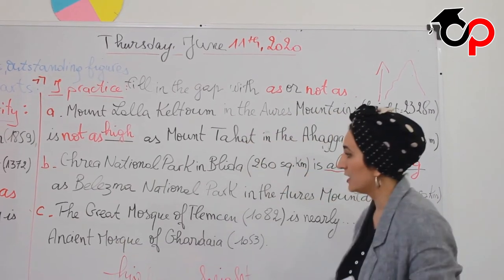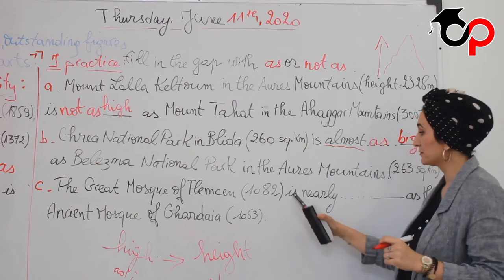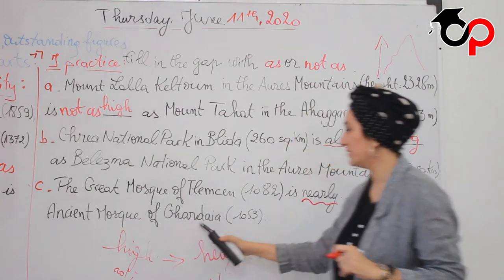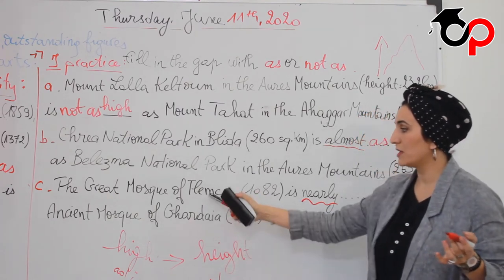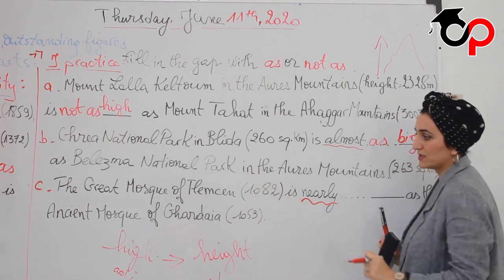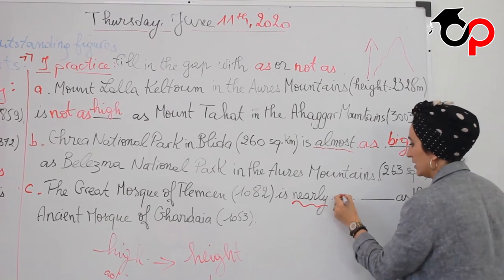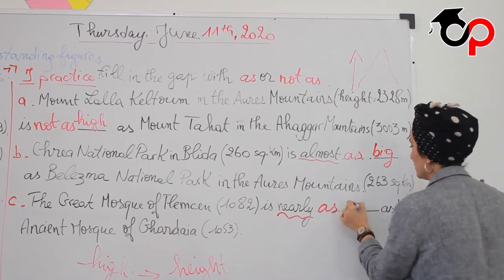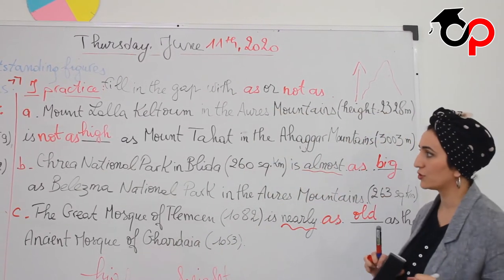The last example of Task 1: The Great Mosque of Tlemcen, which was built in 1082, is very ancient — it is nearly as old as the ancient Mosque of Cordoba, built in 1053. 'Nearly,' like 'almost,' means approximately. These two mosques are ancient. This shows us we have to use the comparative of equality: 'as old as.' The Mosque of Tlemcen is nearly as old as the Mosque of Cordoba.